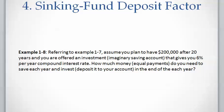For example, referring to example 1.7 from the previous video: suppose you plan to have two hundred thousand dollars after twenty years and you are offered an investment — such as an imaginary savings account — that gives you six percent per year compound interest. You want to know how much equal payments you need to save or deposit at the end of each year.